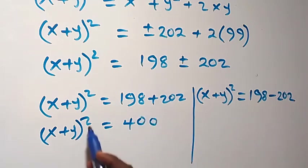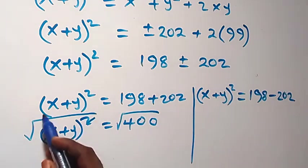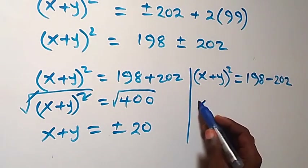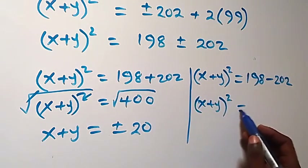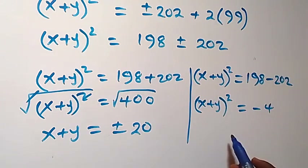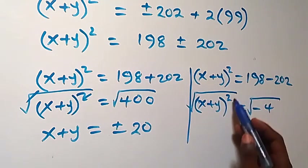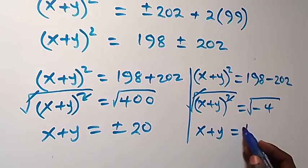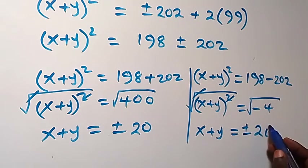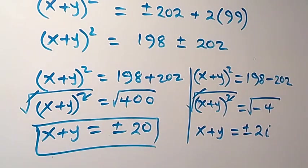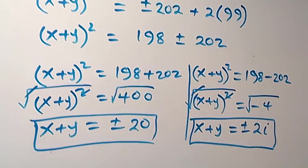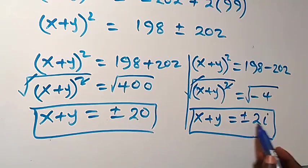Taking the square root on both sides for each case: for x plus y squared equals 400, we get x plus y equals plus or minus 20. For x plus y squared equals negative 4, we take the square root giving x plus y equals plus or minus 2i. So altogether we have four values of x plus y: positive 20, negative 20, positive 2i, and negative 2i.